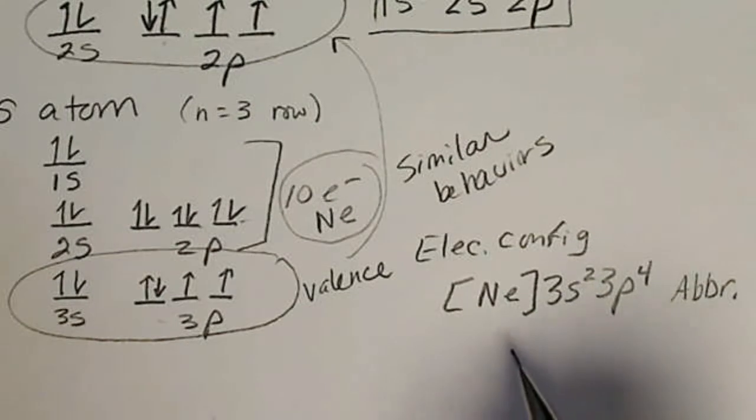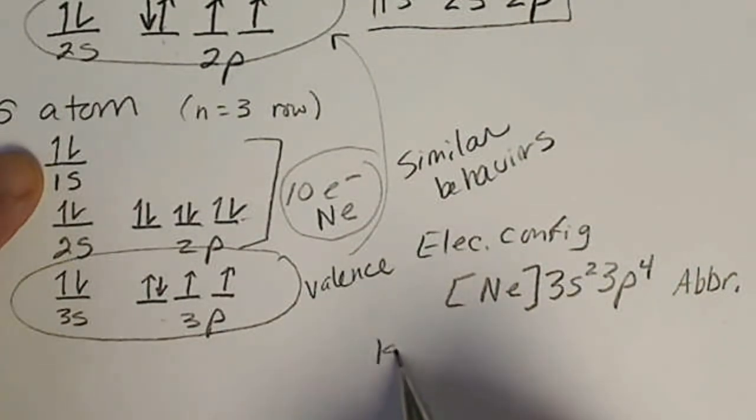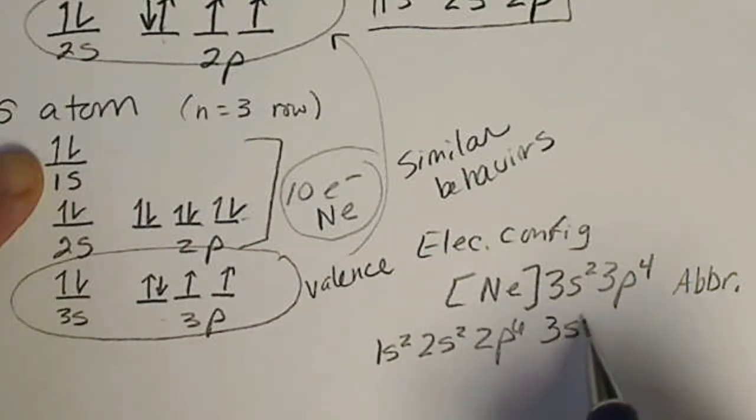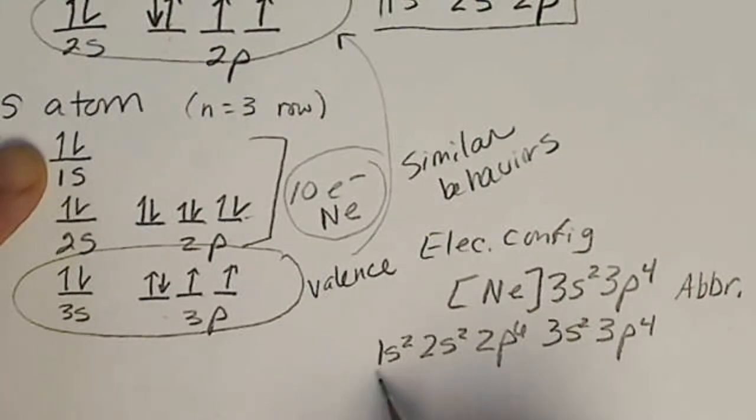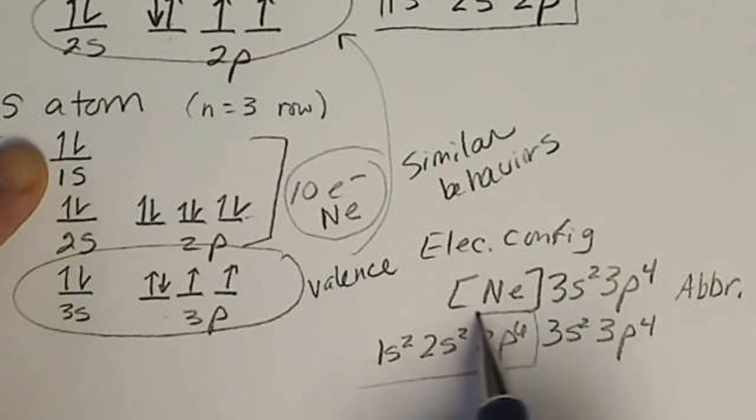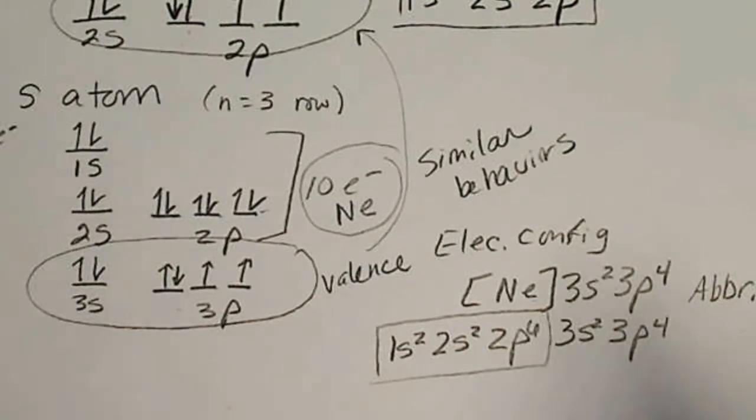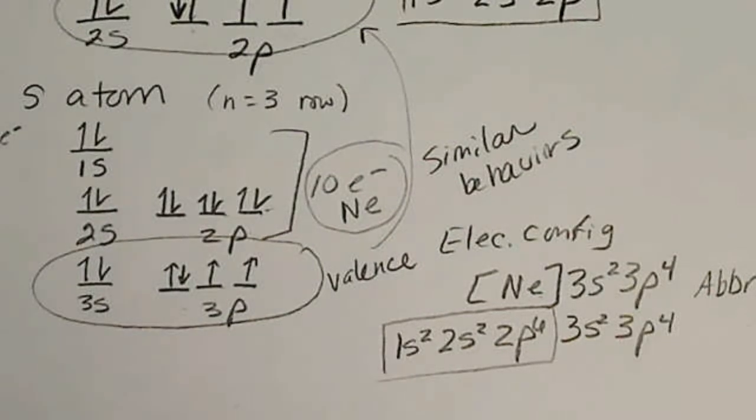We can also write a full electron configuration: 1s2, 2s2, 2p6, 3s2, 3p4. But again, this filled level represents neon, so either of those forms would be correct.